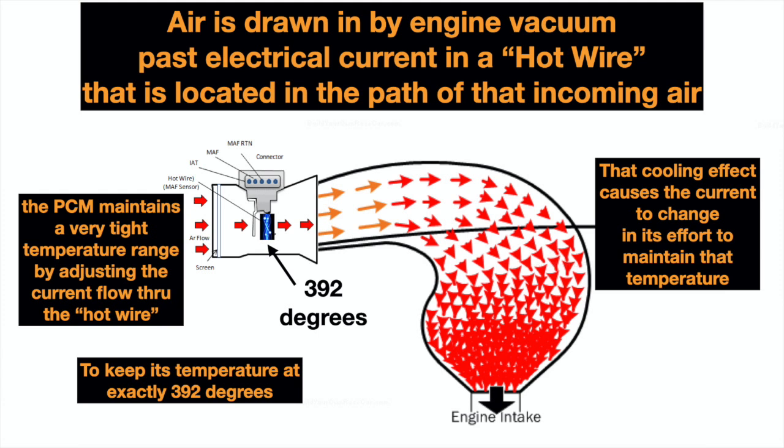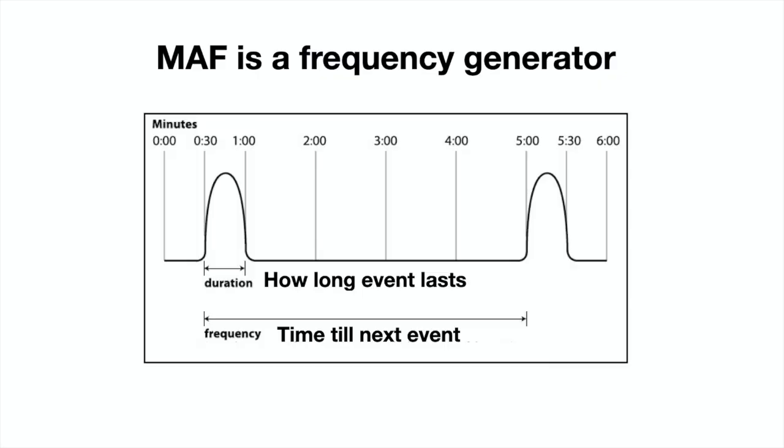This is all happening very, very fast — in milliseconds, maybe even microseconds. Because of that, it's actually generating a frequency, and that's being sent out to the PCM to tell it how much current is needed to keep that wire at a certain temperature. That's what we're monitoring on the signal wire: the frequency, or how often it has to send current.